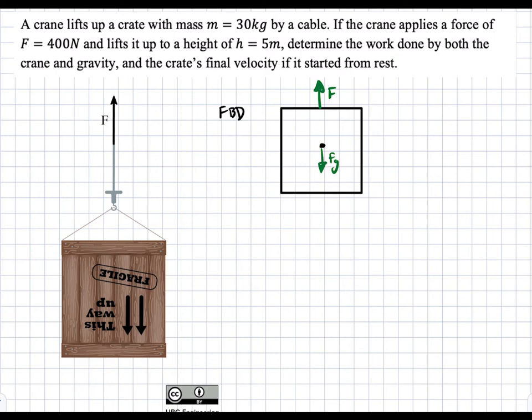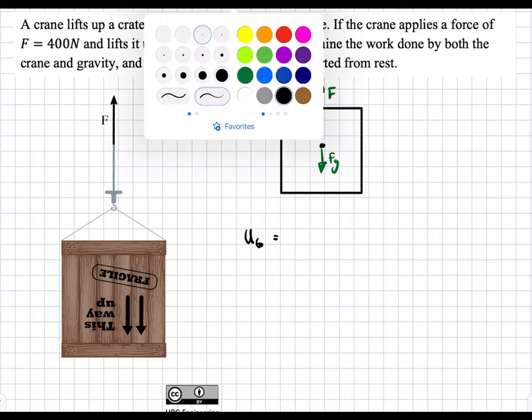So we're asked to find the work done by gravity first. The work done by gravity, we're going to call Ug, is just going to be the force due to gravity times the distance that is traveled.